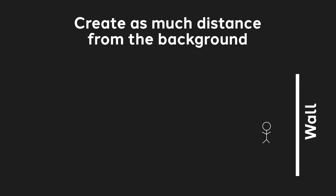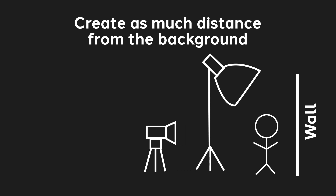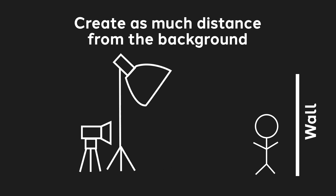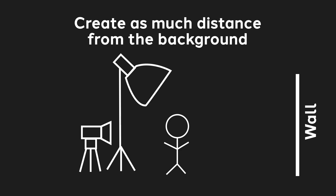Now, this all depends on the space you're in, the height of your ceilings, and how your setup is set up. The first thing is you want to move forward. You want to try to get as much space as you're able to from the background. So that means you want to move your camera back, you can move your light back, and you want to move yourself a little bit forward. By doing that, it's going to help reduce this shadow right back here.